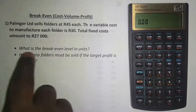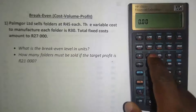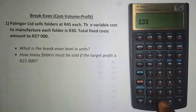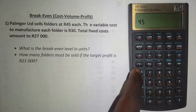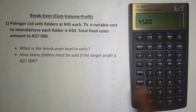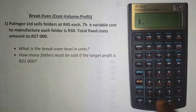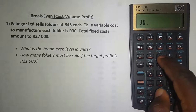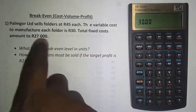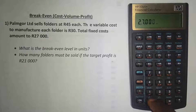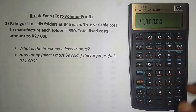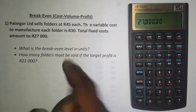For the break-even level in units, let's start by putting in the selling price. I press 45, then press the blue arrow, then press this button for selling price. Then the variable cost is 30 Rand, so I press 30, press the blue button, and then press here where it's written variable cost on top of the button. Then the total fixed cost is 27,000 Rand, so I press 27,000, then press the blue button, and press here where it's written FC on top of the button.